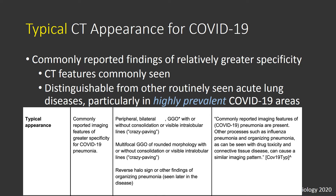The first category is typical CT appearance for COVID-19. These are commonly reported CT features of COVID-19 in the literature of relatively greater specificity. Not only are they commonly seen with COVID-19, they are more distinguishable from other routinely seen acute lung diseases, particularly in highly prevalent COVID-19 areas.